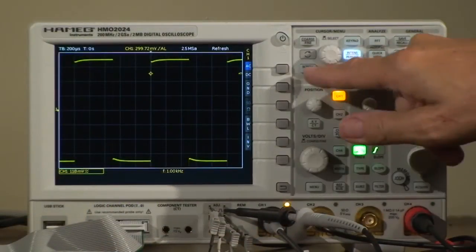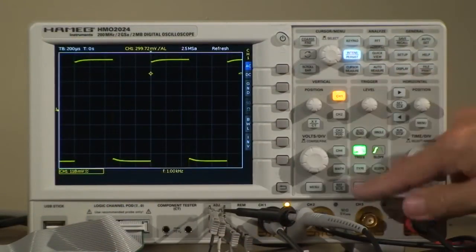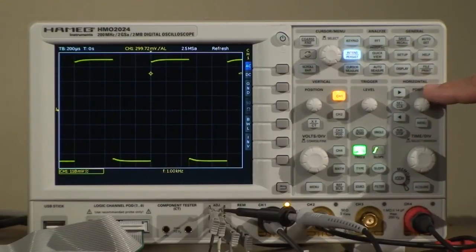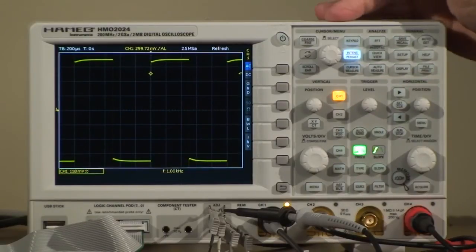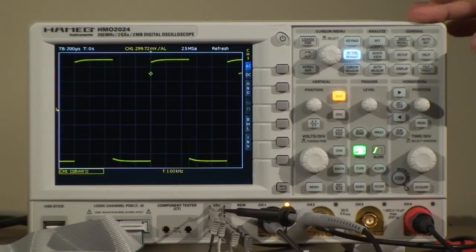Going over the controls real quick, we have the vertical section here, we have the trigger section, and we have the horizontal section. Up here we have the cursor menu section, analyzer, and general section.